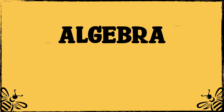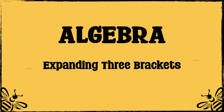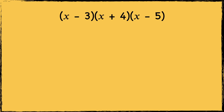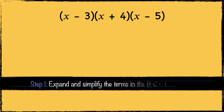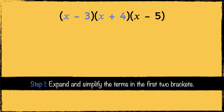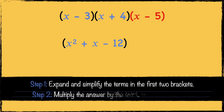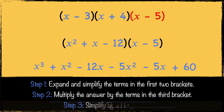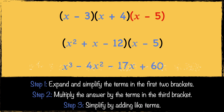In this video we'll explore how to expand expressions with three brackets. When we expand three brackets we follow three steps. Step one: we expand and simplify the terms in the first two brackets, ignoring the third bracket initially. Step two: we multiply the answer by the terms in the third bracket. Step three: we simplify by combining any like terms.